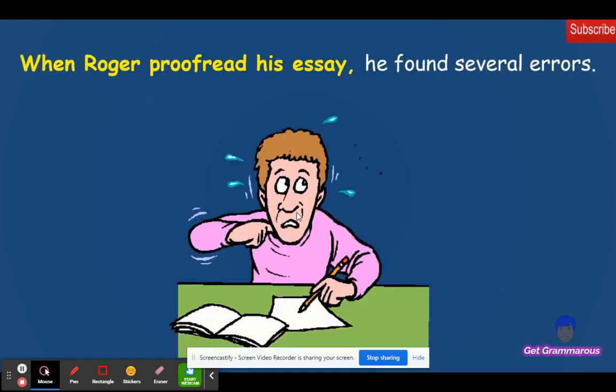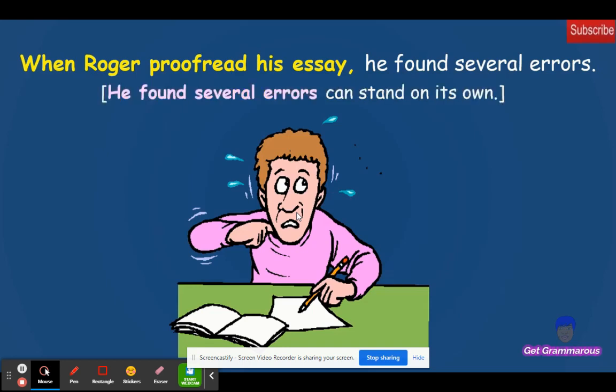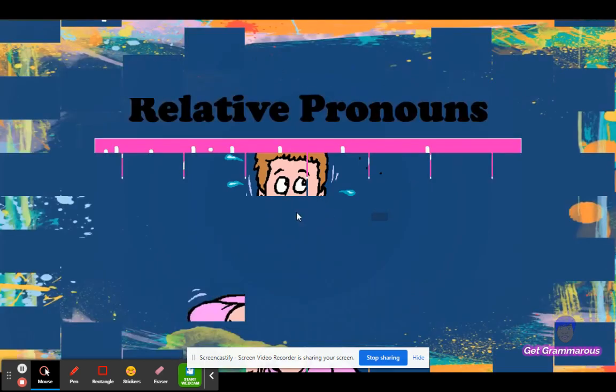Another example: When Roger proofread his essay, he found several errors. When Roger proofread his essay is the dependent clause because it cannot stand on its own as a sentence. However, he found several errors can stand on its own.